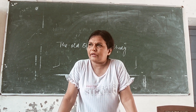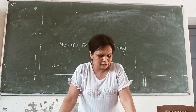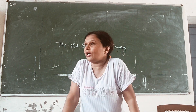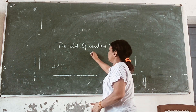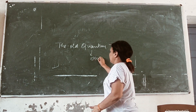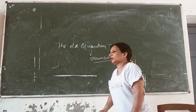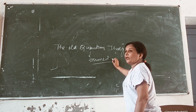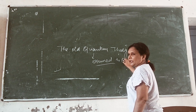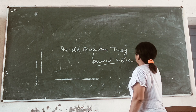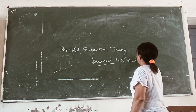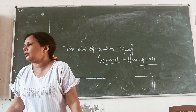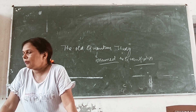The old quantum theory was made up of various theories involving the assumption of quantization. The assumption of quantization is called quantization, involving particle nature. Quantization is made up of matter, like light wave nature and particle nature.